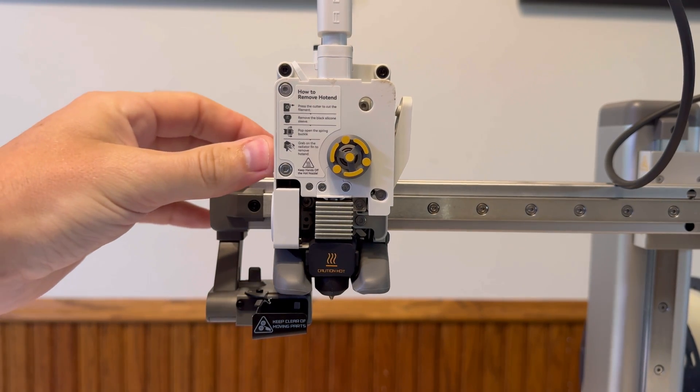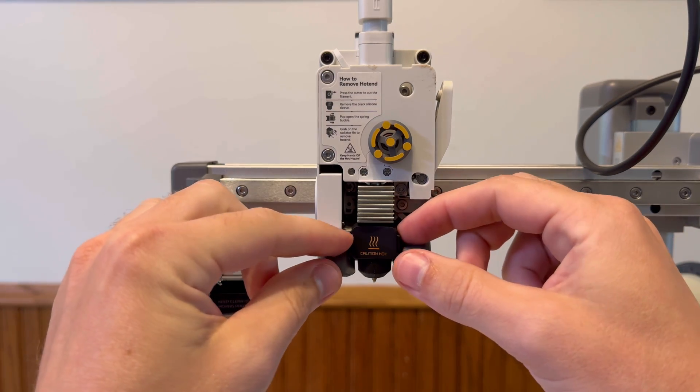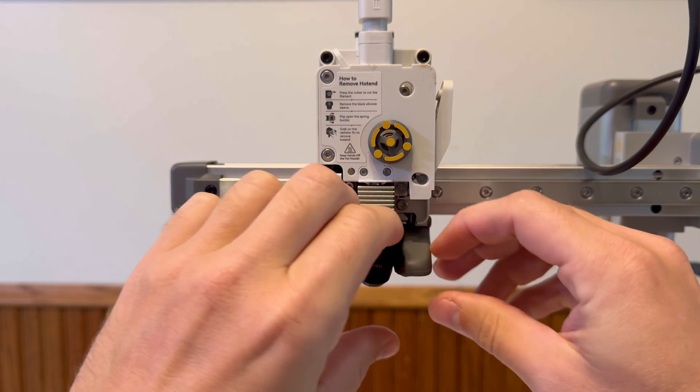Next what we want to do is move this head unit over a little bit just so it's out of the way of this. Next we want to remove this nozzle cover. This is like a little rubberized cover. You can kind of just pull this down here.